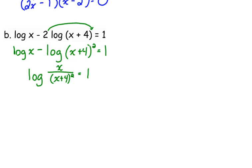We wrote it in exponential form, so let's do that. There's no base on our logarithm, so it's base 10. If we write this in exponential form, that would be 10 to the first is equal to x over x plus 4 squared.